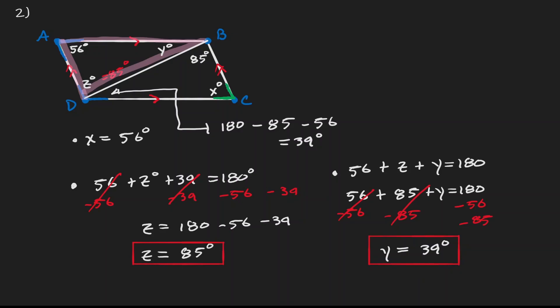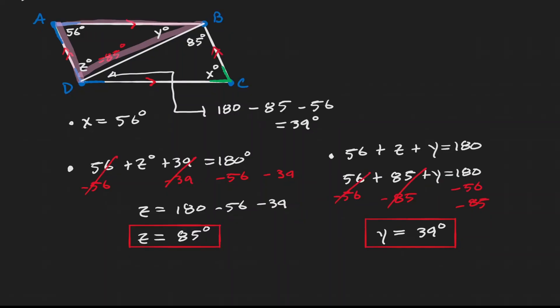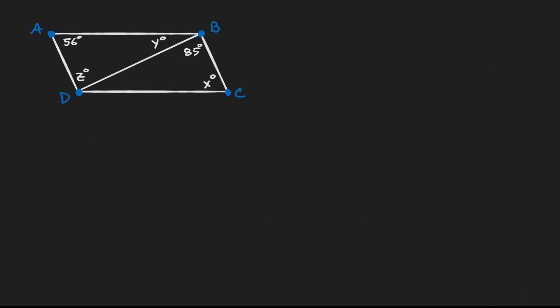Notice that here I used a combination of properties of triangles and properties of angles within a parallelogram. We could also solve this problem in a different way, so let's take a second perspective on the same problem. I can still use opposite angles being congruent: angle A is opposite to angle X, so X is equivalent to 56 degrees. Don't forget that we have parallel lines — this side is parallel to this side, and this side is parallel to this side.